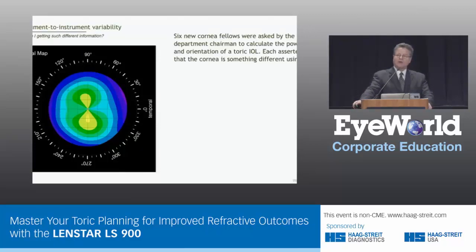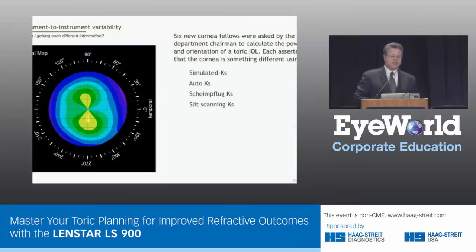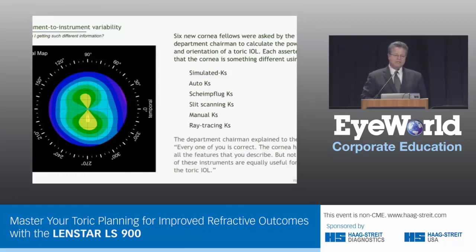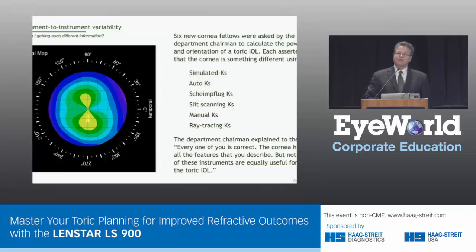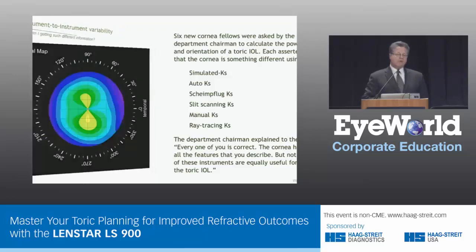There are now six new cornea fellows at the university, asked by the department chairman to calculate the orientation and power of a Toric IOL. Each asserted that the cornea is different, using simulated keratometry, autokeratometry, Scheimpflug keratometry, slit-scanning keratometry, manual keratometry, or ray-tracing keratometry. The department chairman said: every one of you is correct — the cornea has all the features you describe — but not all of these instruments are equally suited to the Toric IOL. That's what we're going to talk about today: how to touch the cornea with our measurement techniques and come up with the right answer.